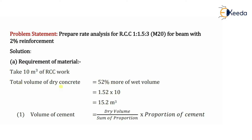The first step is to calculate the dry volume of concrete. The formula is: dry volume is 52 percent more than the wet volume. The wet volume is 10 meter cube, so dry volume = 1.52 × 10 = 15.20 meter cube. This is the dry concrete required for 10 meter cube of RCC work.